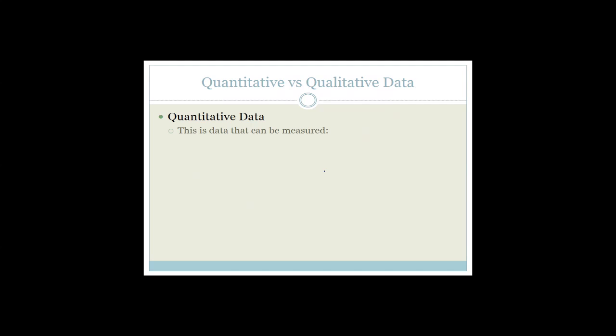Quantitative data is data that can be measured — in other words, how long something is, how big the area is, the volume, the time, and speed. Quantitative is 'how much.' You can actually measure it with a ruler or a measuring cylinder.